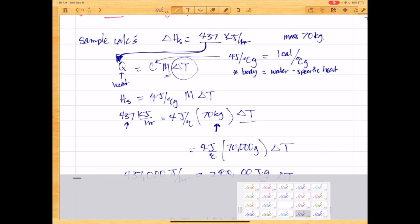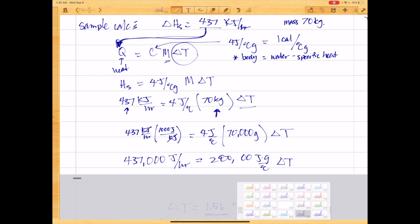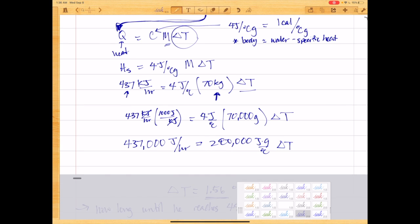So 437 kilojoules per hour. We can convert that into joules because there's 1,000 joules per kilojoule. So that'll cancel, and then what we have is 437,000 joules per hour equals, multiplying this out, 280,000 joules per degree Celsius times delta T. So dividing both sides by 280,000 joules, grams, degrees Celsius.